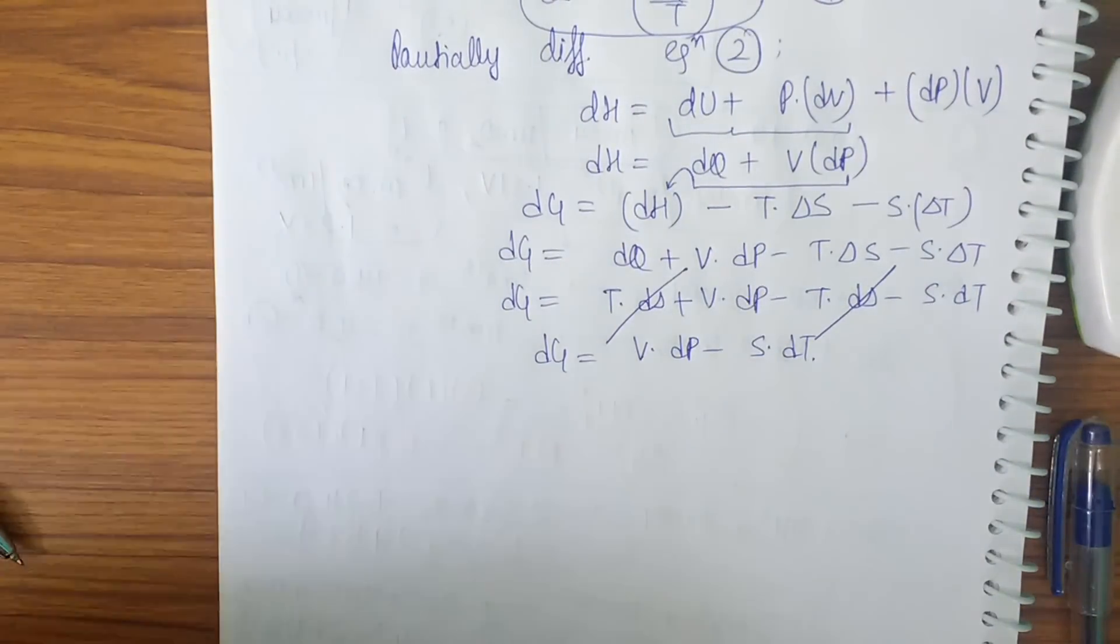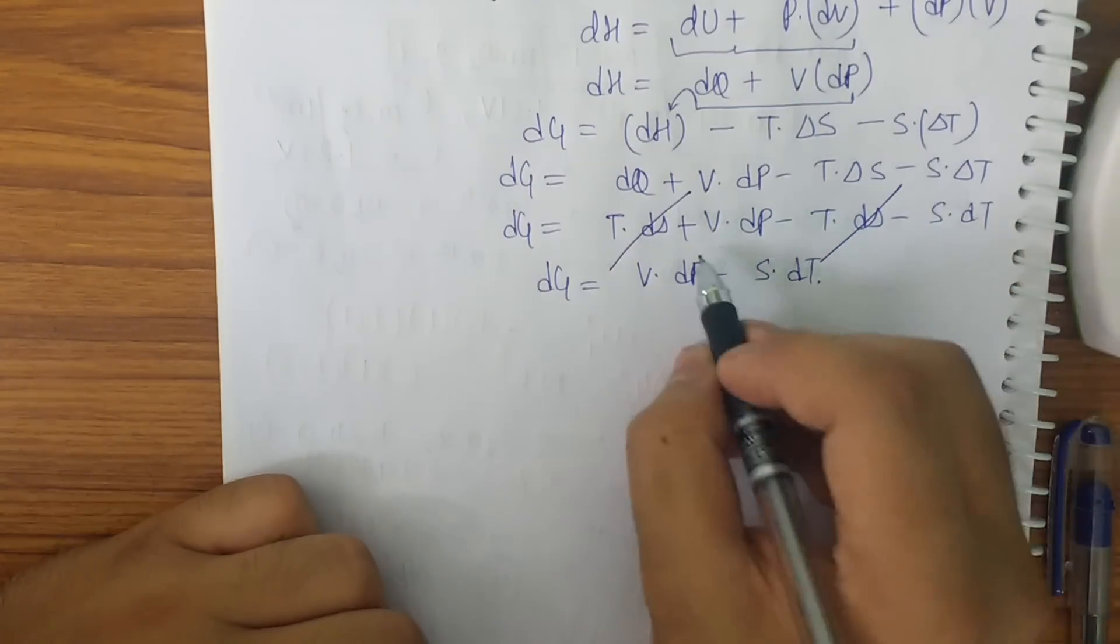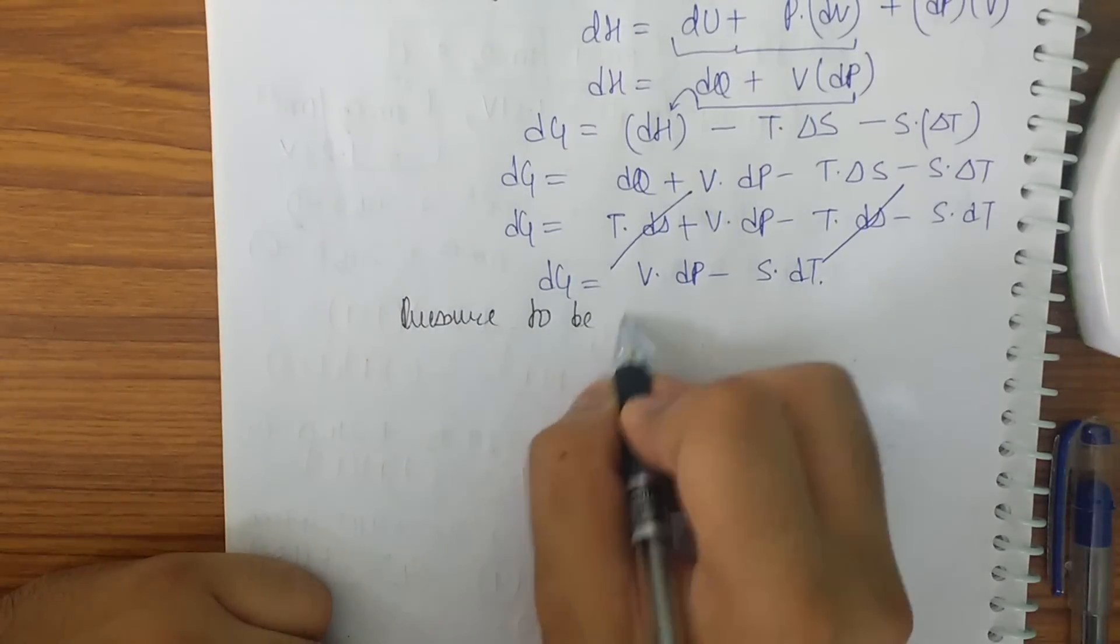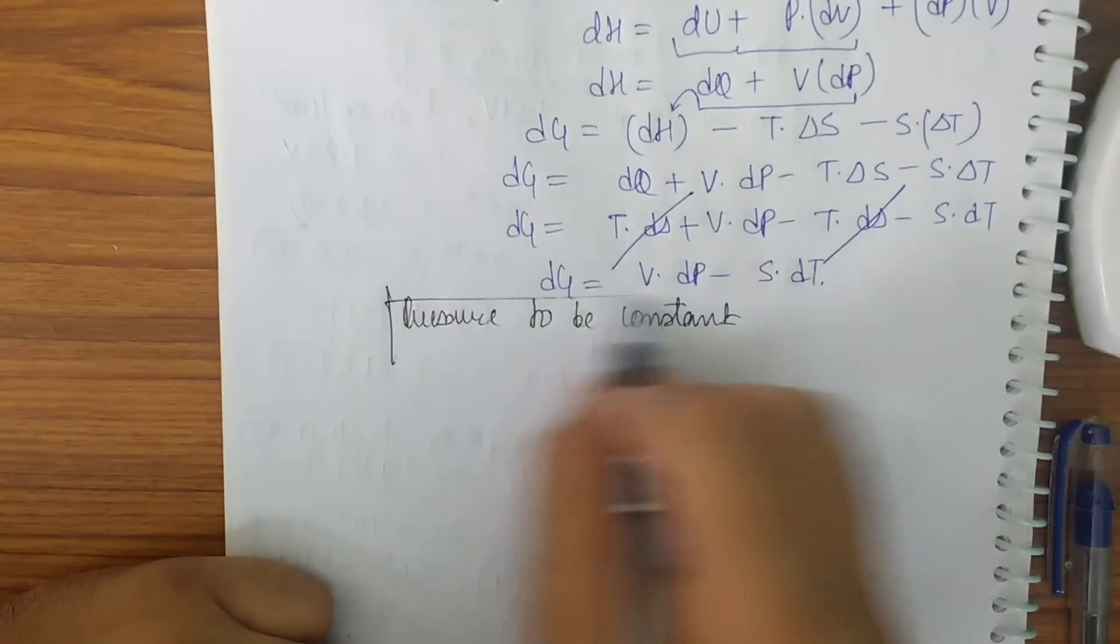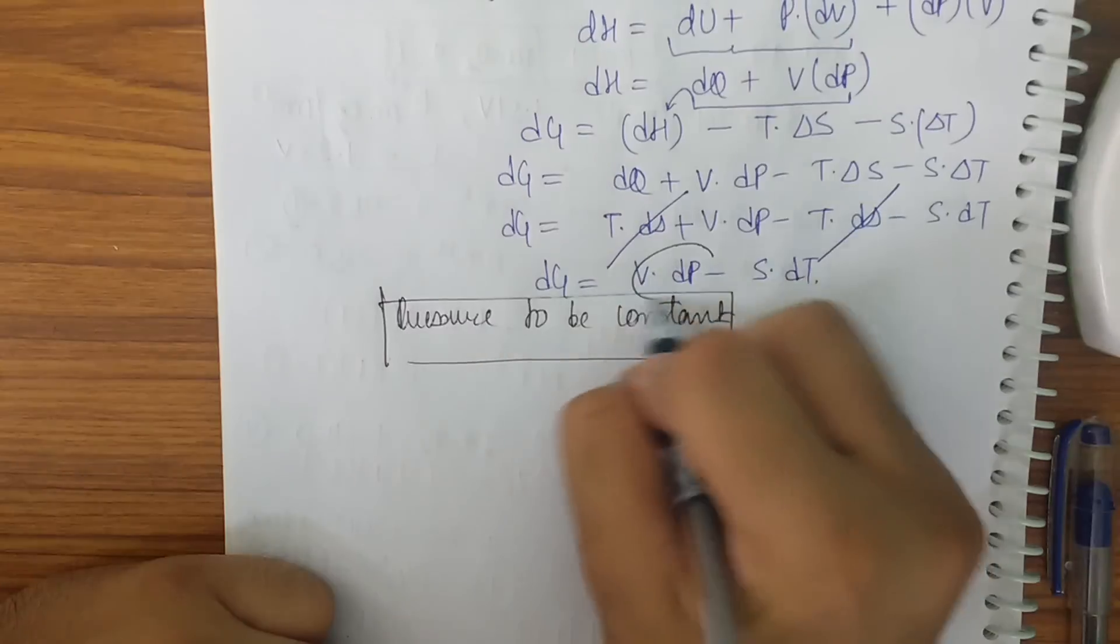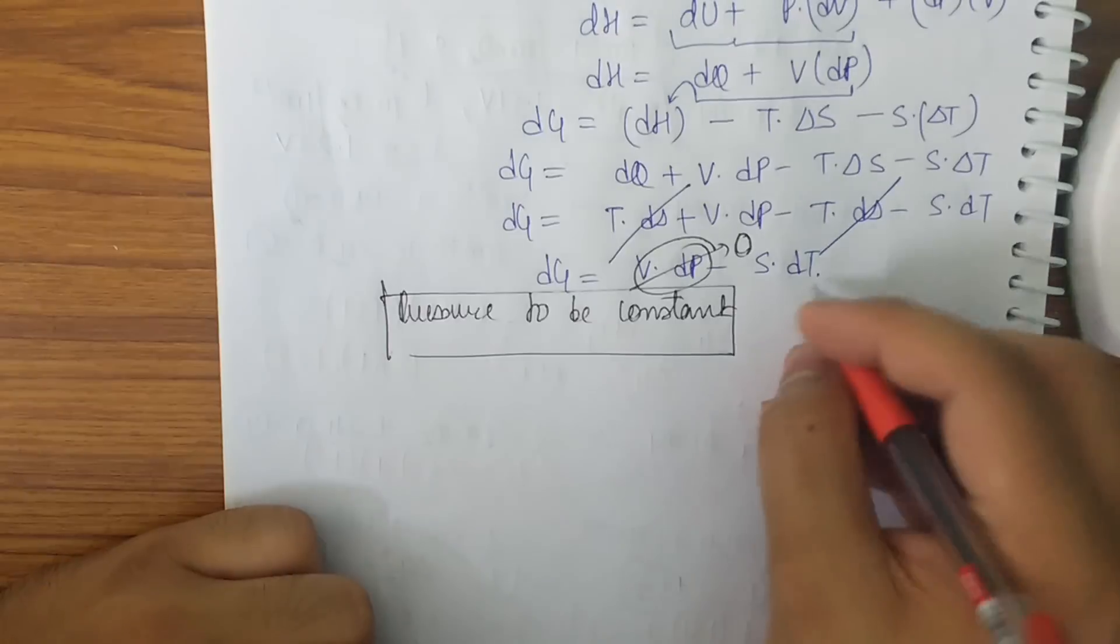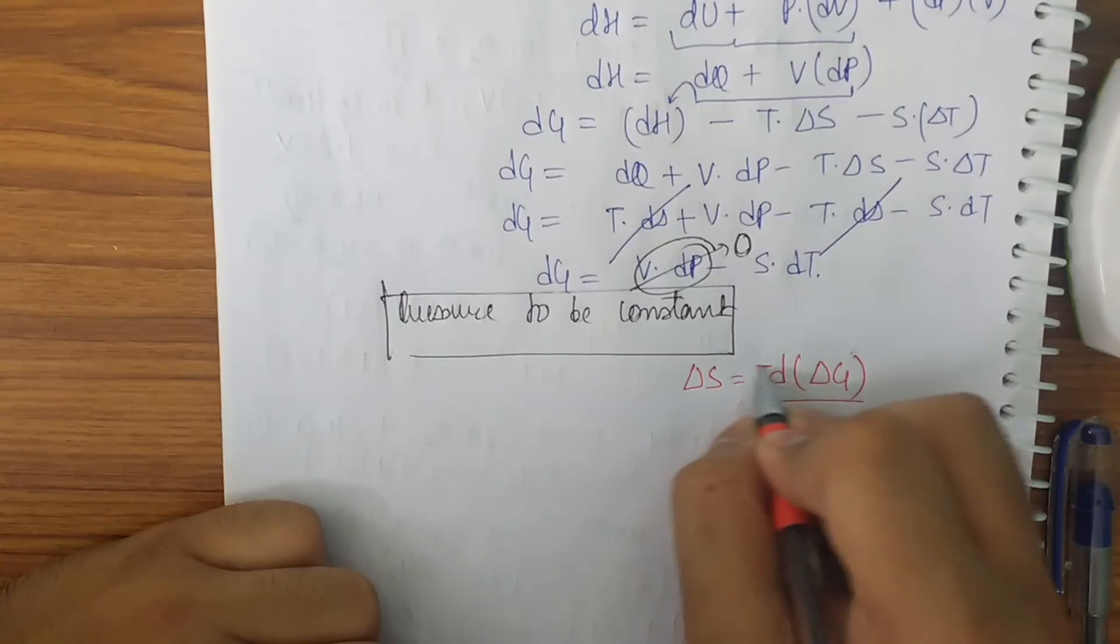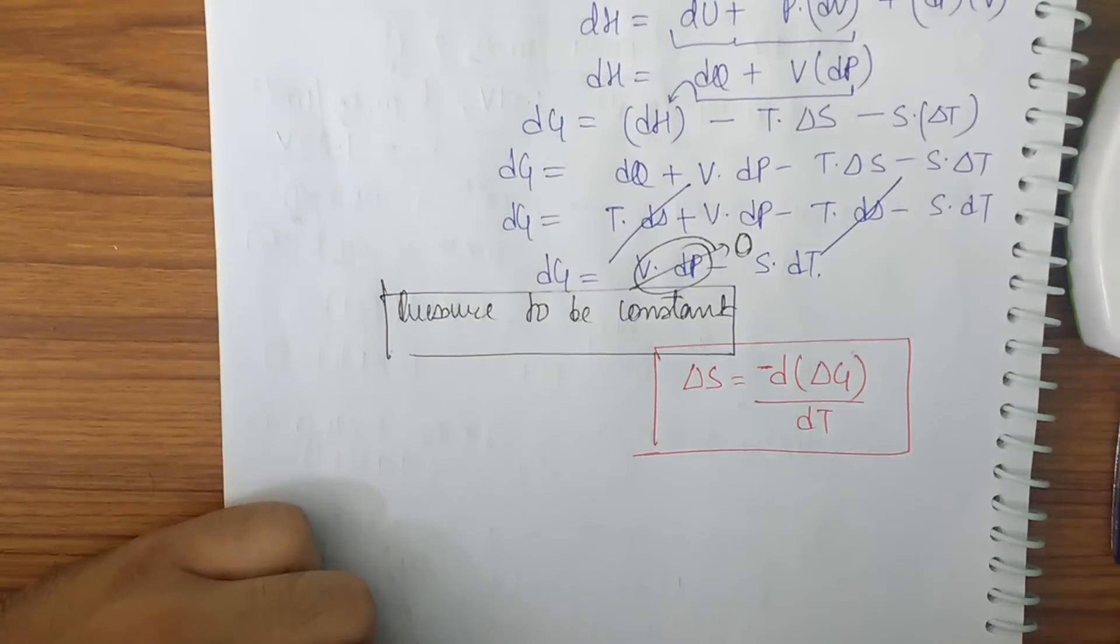Now here comes the important point. For getting the desired equation, we take the pressure to be constant. So a question can be asked that what thing is maintained constant. So the pressure has to be maintained constant so that the DP terms go towards zero. So what is the final equation that we get is delta S to be minus D of delta G upon DT. So this is the equation that we get.